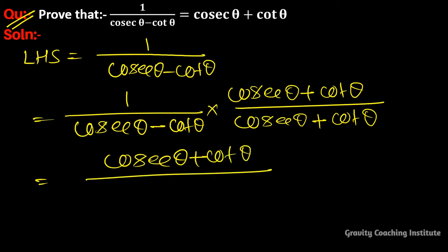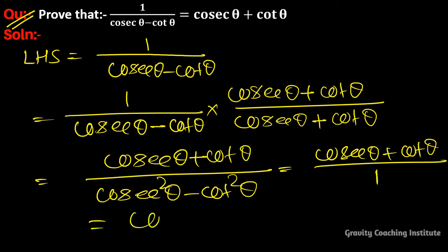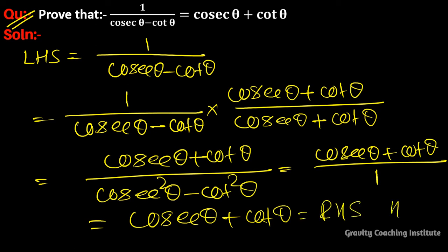The denominator becomes cosec²θ - cot²θ. Using the identity cosec²θ - cot²θ = 1, this simplifies to cosec θ + cot θ, which equals RHS. Hence proved.